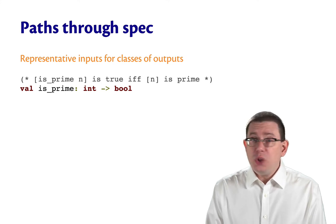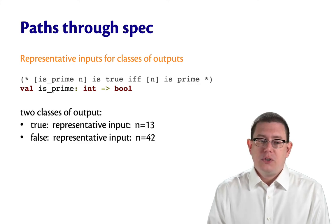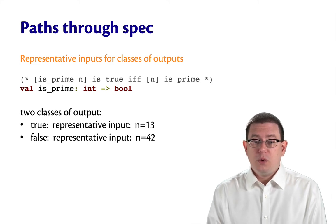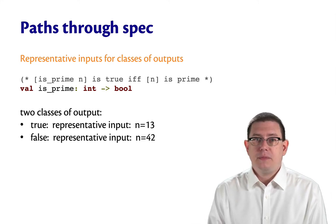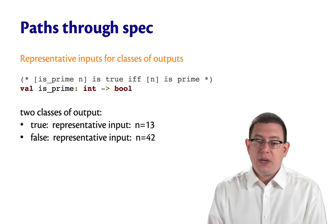Now there are all kinds of values you might think of to throw into this function to test. But there's only two classes of output from this function, true and false. So a representative input to trigger the output of true would be a prime number, like 13. A representative input to trigger the output of false would be a non-prime number, say 42.